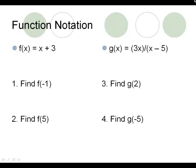When we evaluate a function for a specific value, like on number 1 we're evaluating for negative 1, that means we're plugging that in as x into the f equation. So on number 1 it says find f of negative 1, and that means we are doing negative 1 plus 3, and we get an answer of 2. On number 2, you are plugging 5 in as x, and you're doing 5 plus 3 to get 8 for an answer.